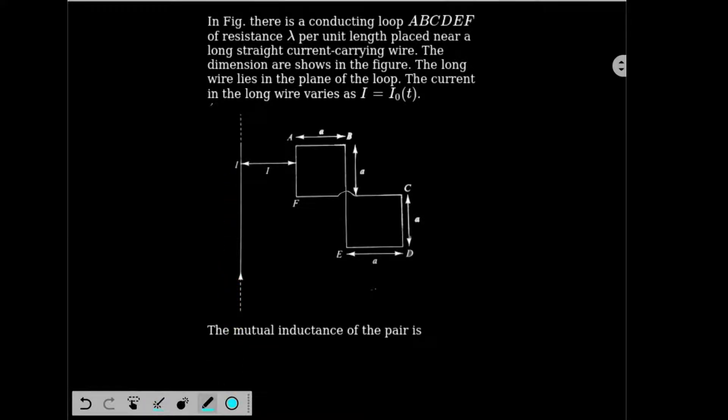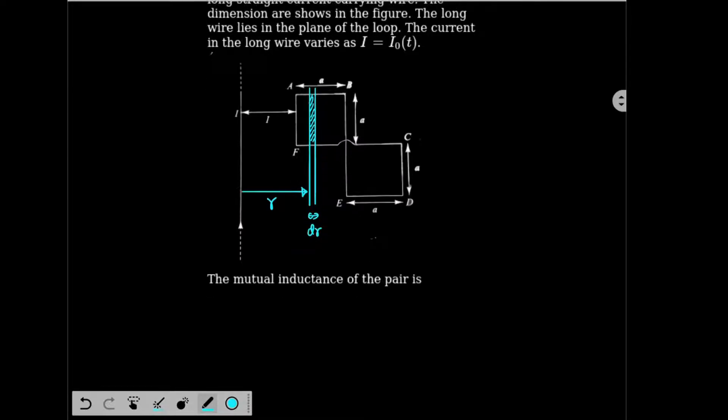First of all, we have to find the magnetic field at a radius R. We find the magnetic field at a radius R. And then we find the flux because of that magnetic field through this element, through the element of the loop. So this length will be DR. So first of all, B at radius R will be how much? Mu0 IA by 2 pi R.